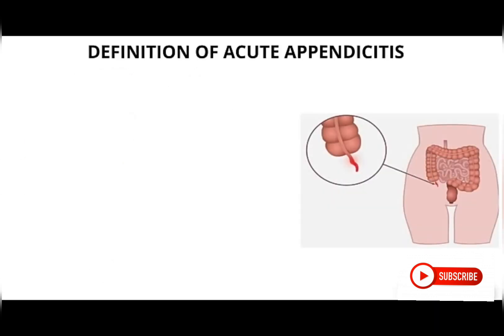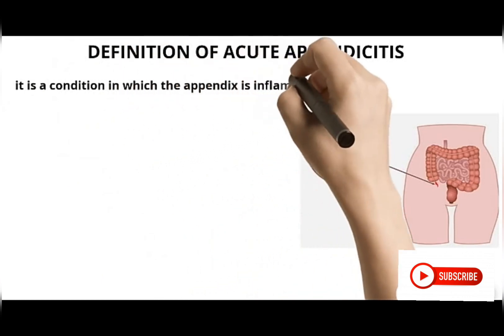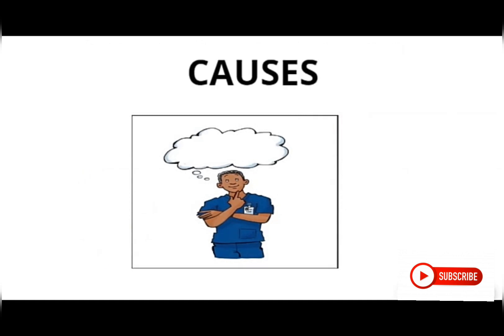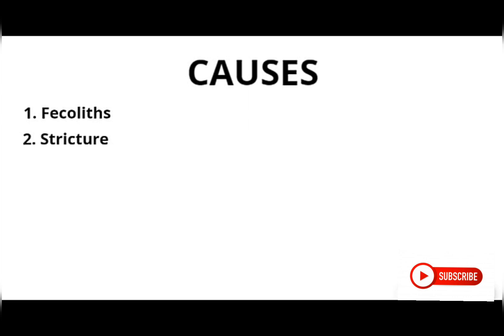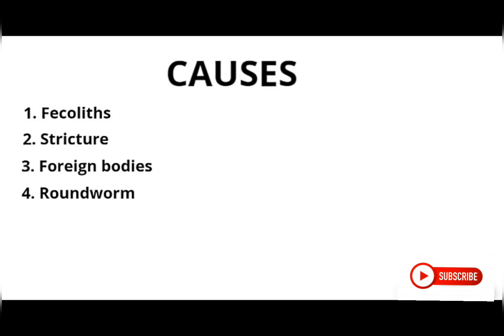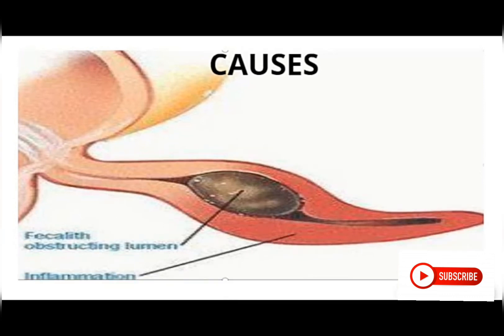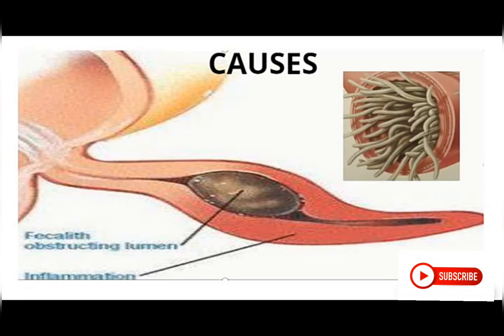Now we dive into the main condition: acute appendicitis is a condition in which the appendix becomes inflamed and filled with pus, causing pain. Causes of inflammation include fecalith, stricture, foreign bodies, tumors, adhesions, and kinking. A fecalith is a fecal component that obstructs the appendix lumen or the flow of contents in and out. Foreign bodies like undigested food, roundworms, and cancers can also cause obstruction.